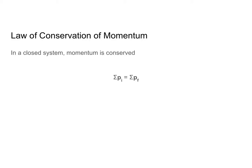We're going to start by talking about the law of conservation of momentum, which states that in a closed system, momentum is conserved. We can summarize that mathematically by saying that the sum — which we use that capital sigma to represent — of our initial momentum is equal to the sum of our final momentum. One thing to keep in mind is that momentum is a vector, so the direction of our motion is going to affect whether we are adding or subtracting when we're looking at it as scalars.